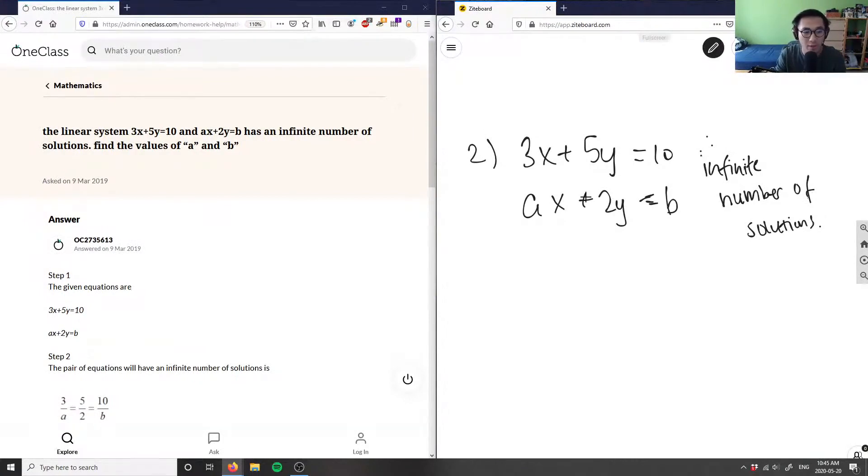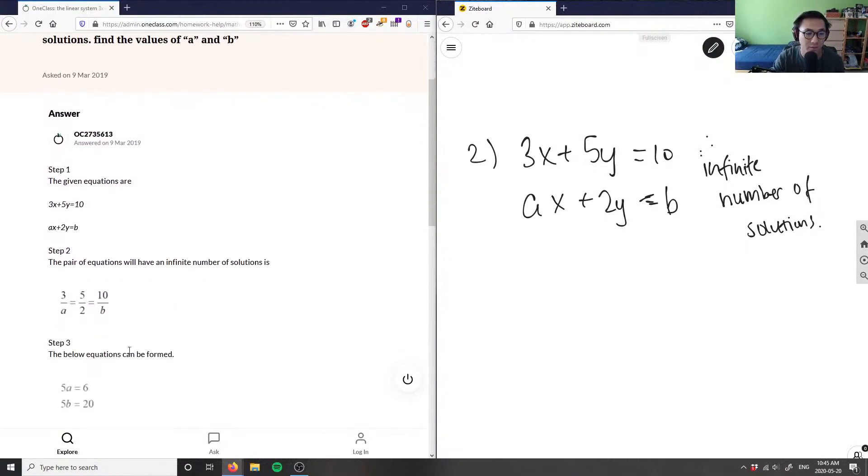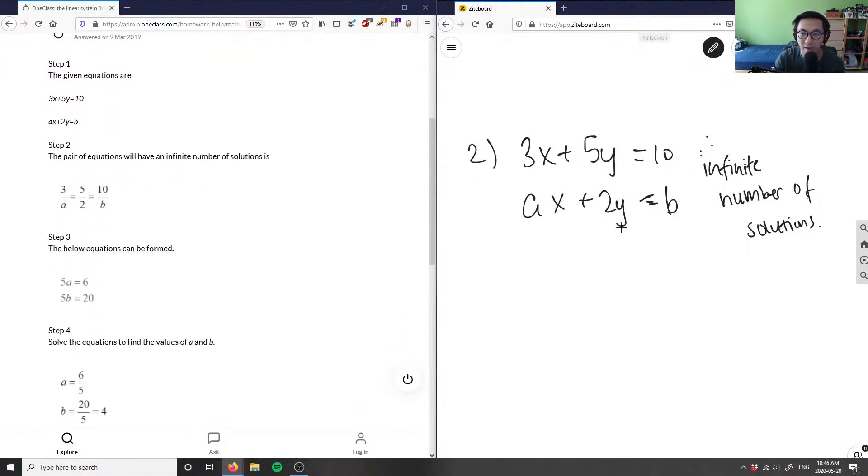Well, I have to make both of these equal to each other. We have 3x plus 5y equals 10, and we know all the numbers in this linear equation, but we don't know a and b in the other one. But we know the 2 here, so we can work with it. What we can do is divide all these terms. They're dividing this equation by this equation here.